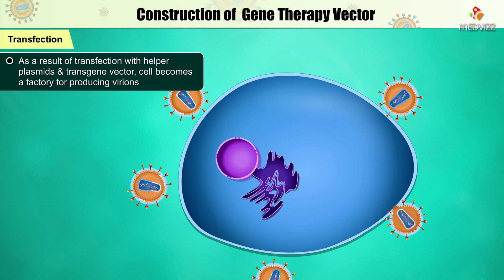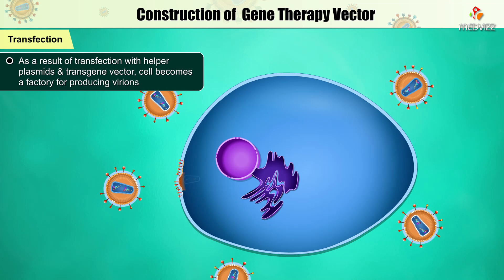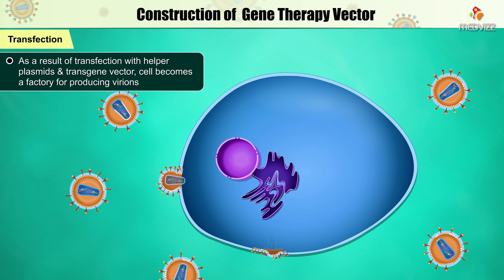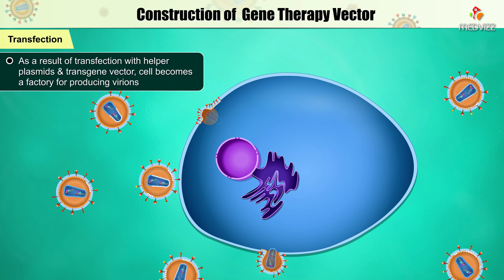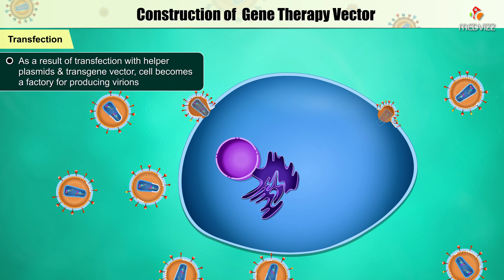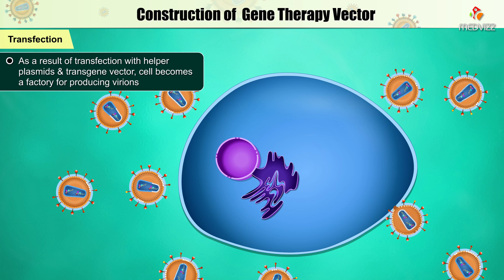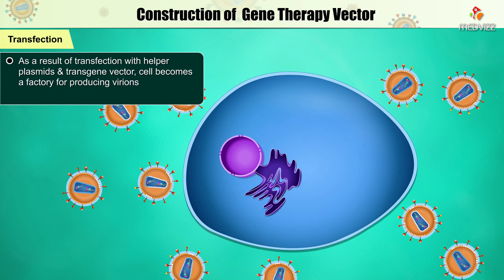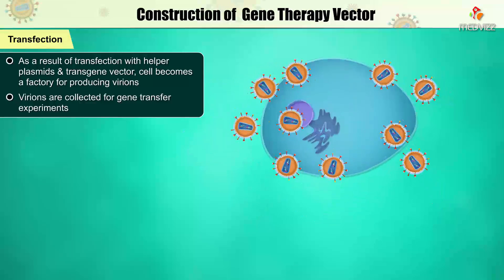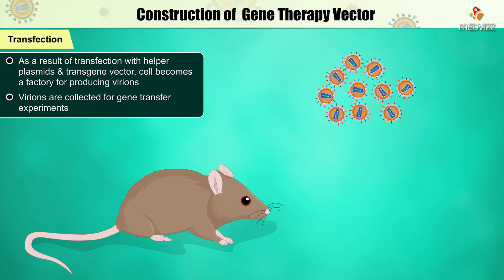As a result of transfection with the helper plasmids and the transgene vector, the cell becomes a factory for producing virions. The virions are collected for gene transfer experiments.